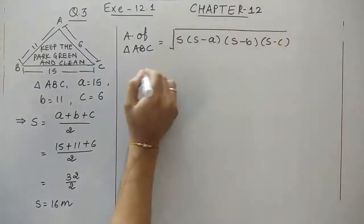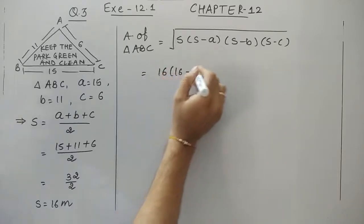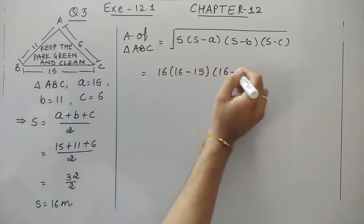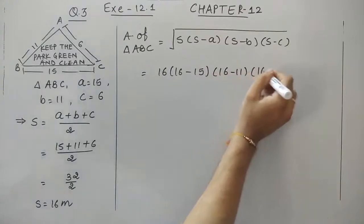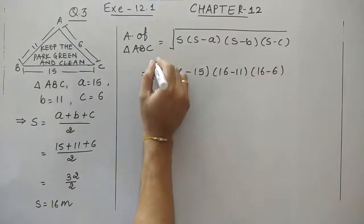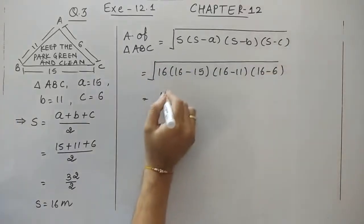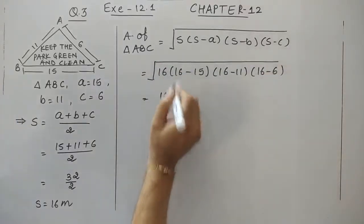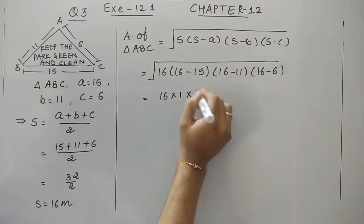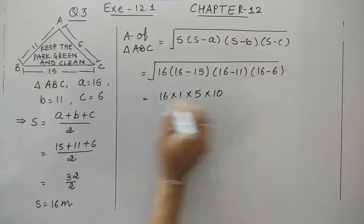Let us substitute the values. S is 16. So we have: 16 times (16 minus 15) times (16 minus 11) times (16 minus 6), which gives 16 times 1 times 5 times 10.